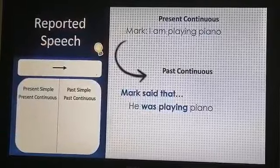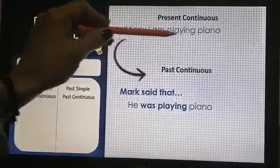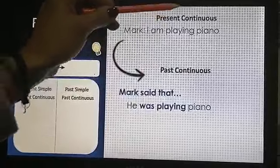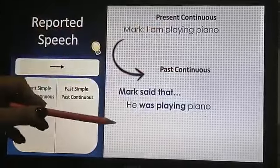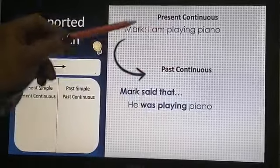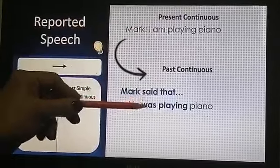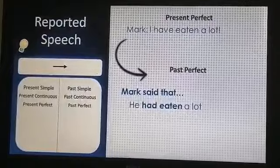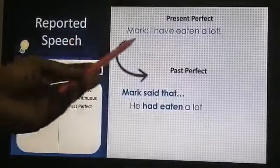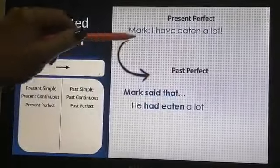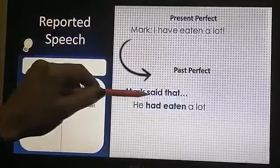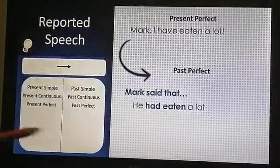Moving on: present continuous becomes past continuous. Mark said 'I am playing piano' — Mark said that he was playing piano. The verb 'am' moves to 'was.' Present perfect moves to past perfect. 'I have eaten a lot' becomes: he had eaten a lot.